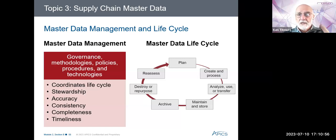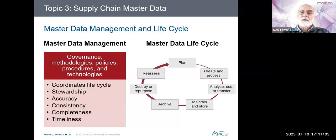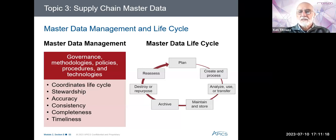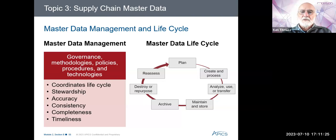So those are the three databases: item master, bills of materials, and routings — and they need to be pristine at all times. That committee is responsible for keeping those databases up to scratch. If companies don't have a committee like that looking after these databases, anarchy reigns in the system. Everybody just goes and does their own thing, and it's an absolute mess. You can't run any kind of computer system like that.